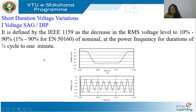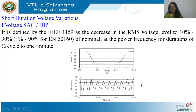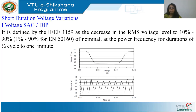A sag occurs at power frequency (50 Hz), lasting between one and a half cycle to one minute. The RMS value dips and then regains — the word sag indicates it comes down. The key difference from under voltage is the duration is less than one minute.